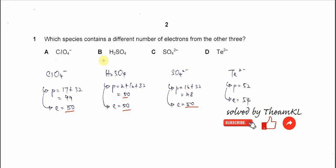So A, B, and C have the same number of electrons. This means D will be the answer.